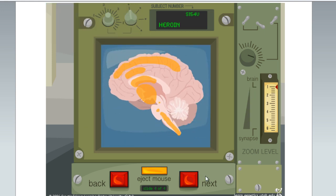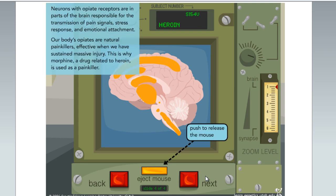Neurons with opiate receptors are in parts of the brain responsible for the transmission of pain signals, stress response, and emotional attachment. Our body's opiates are natural painkillers, effective when we have sustained massive injury. This is why morphine, a drug related to heroin, is used as a painkiller.